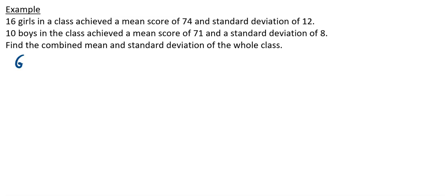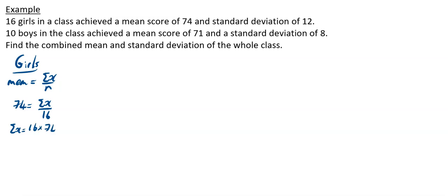Let's look at the girls first. For the girls, the mean is equal to 74. More importantly, the mean formula is sigma x over n. So 74 equals sigma x over 16. That means sigma x is equal to 16 times 74, which works out to be 1184.